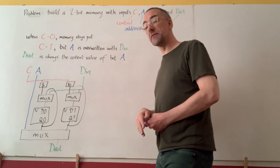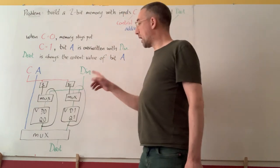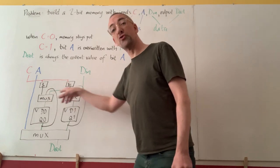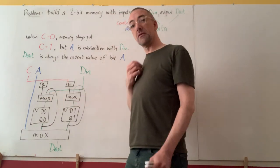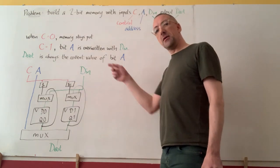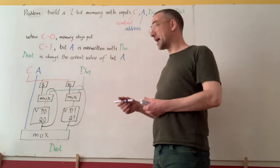So now we have to figure out when C is one, how to tell the correct memory location to take its value from D_in. And that means every memory location needs to be able to detect its own address.